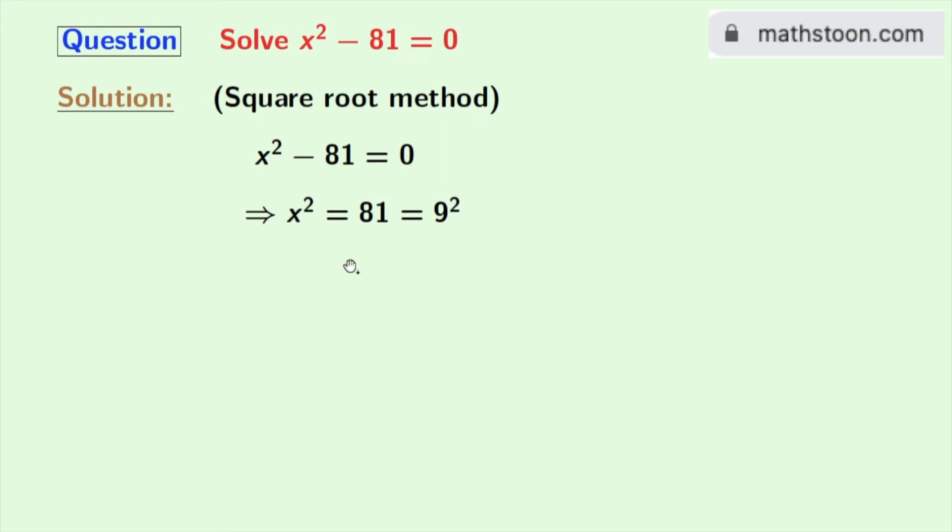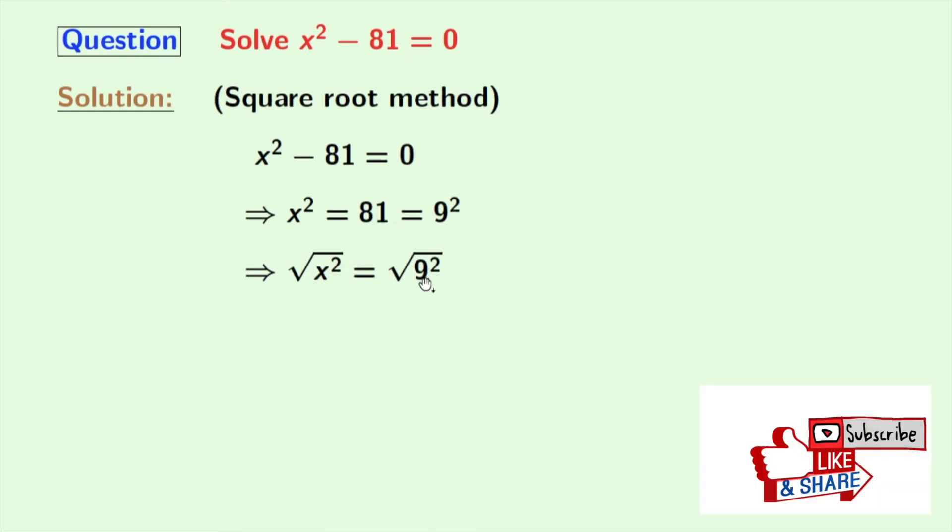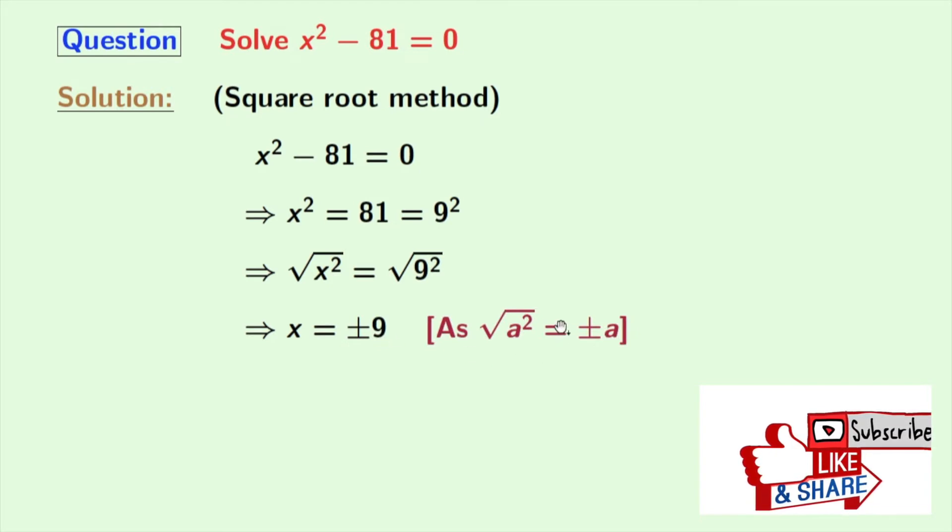Now taking square roots on both sides, we get root over x square equals root over 9 square. We get x on the left hand side and plus minus 9 on the right hand side. As we know that root over a square equals plus minus a, here a is 9.